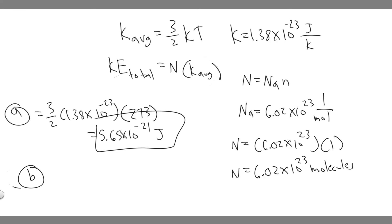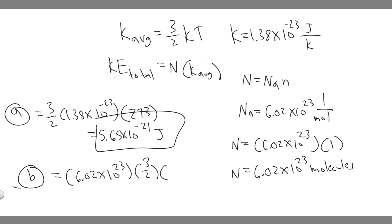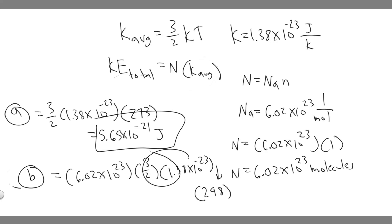Now we have N, so we need to calculate K average. The formula is 3/2 times K, which is 1.38 times 10 to the minus 23, times T. The temperature is 25 degrees Celsius, which we convert to Kelvin by adding 273, giving us 298 K. Plugging everything into the calculator — 6.02 times 10 to the 23 times K average — you get about 3,700 joules.